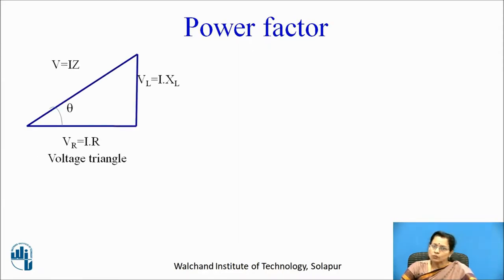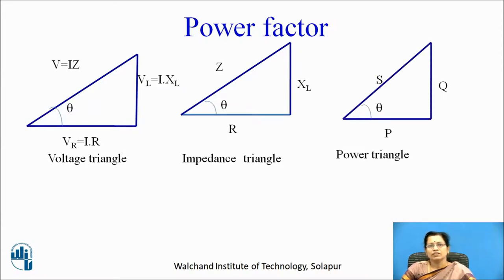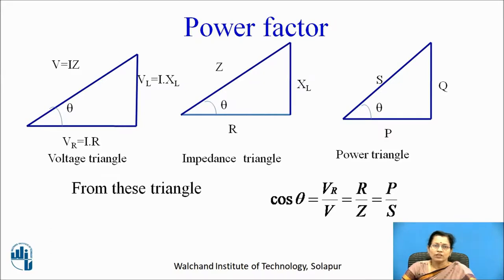Now we are going to discuss the power factor, which is very important for electrical circuits. From the voltage triangle, impedance triangle, and power triangle, we can write the power factor as cos theta equals Vr by V, equals R by Z, equals P by S. The cosine of the angle between voltage and current is the power factor, which indicates the factor of power consumed in the circuit.